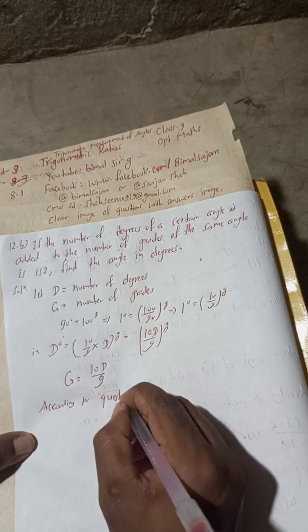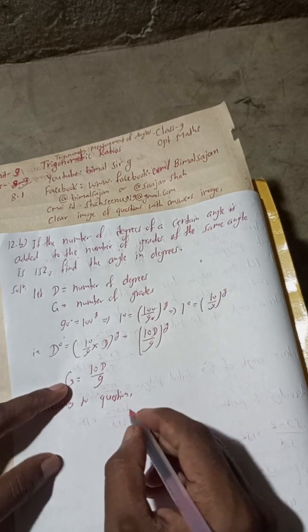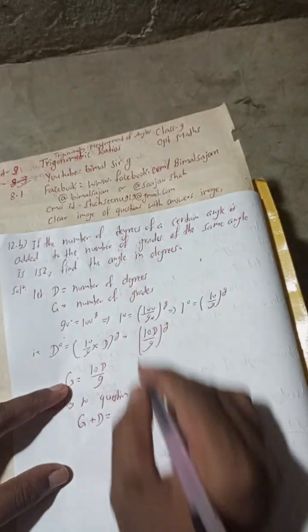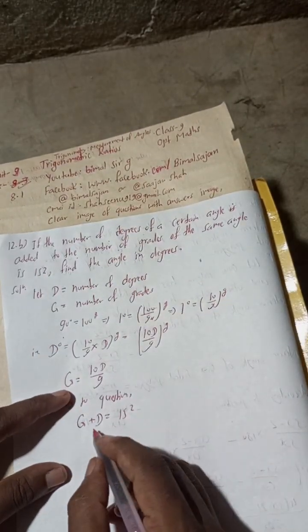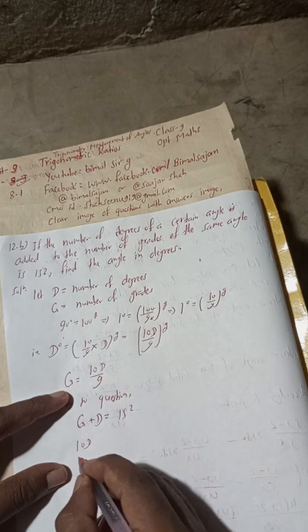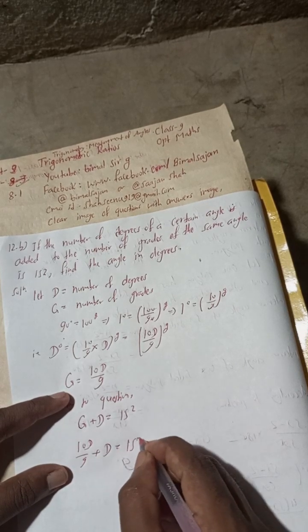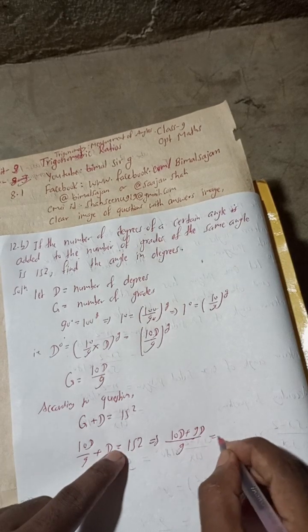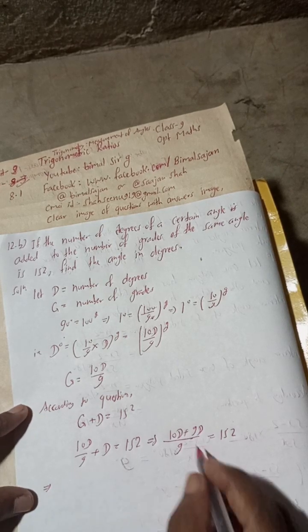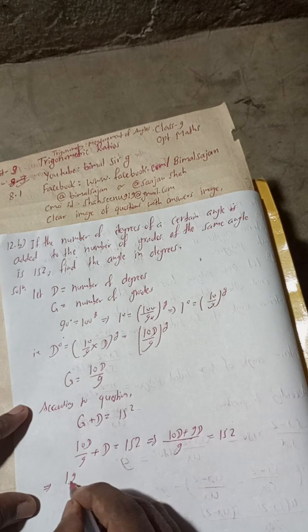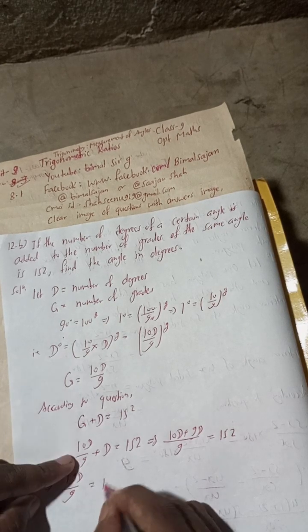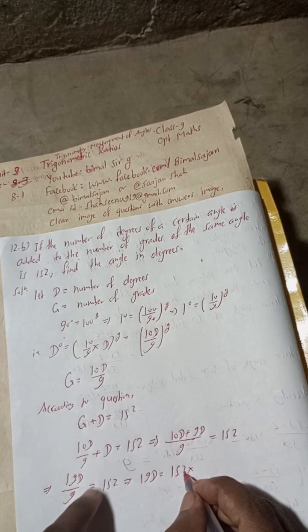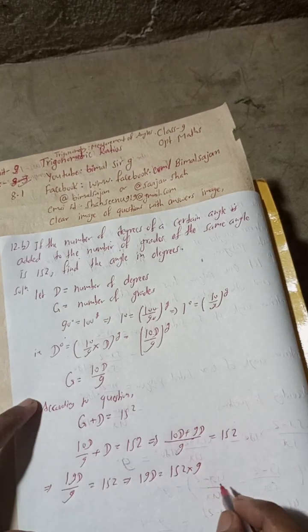From here, G we can substitute the value: 10D by 9 plus D equals 152. Solving this, 9 is the LCM. So 10D plus 9D equals 152 times 9. This gives us 19D by 9 equals 152.